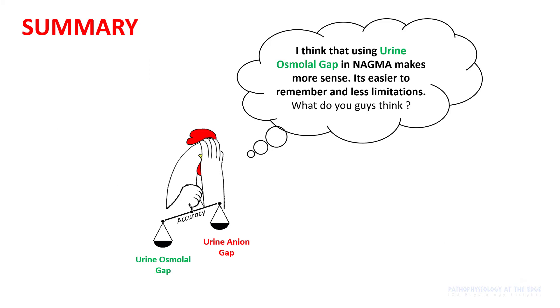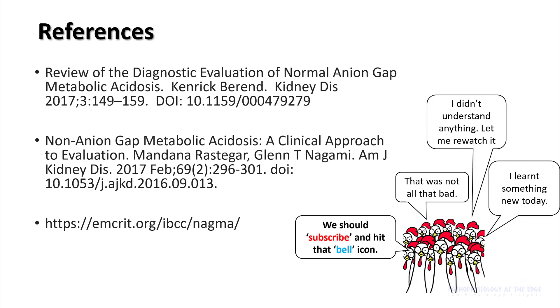I think that the urine osmolal gap in non-anion gap acidosis makes more sense because it's easier to remember and has fewer limitations. Let me know what you think in the comments below. These are the references. Thank you.